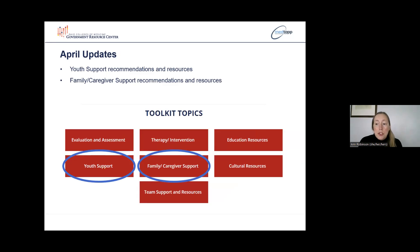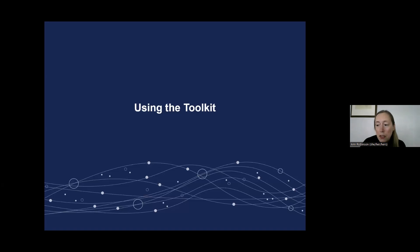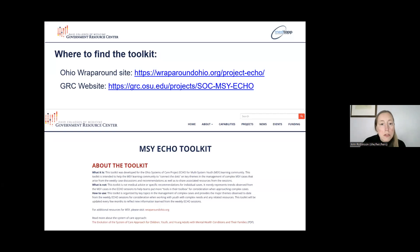This screenshot from the home page of the toolkit shows the different topic headings under which items are housed within the toolkit — these are all buttons on the toolkit. The toolkit can be accessed from the Ohio Wraparound Site Project ECHO page or the GRC website, and I can also post these links in the chat later.